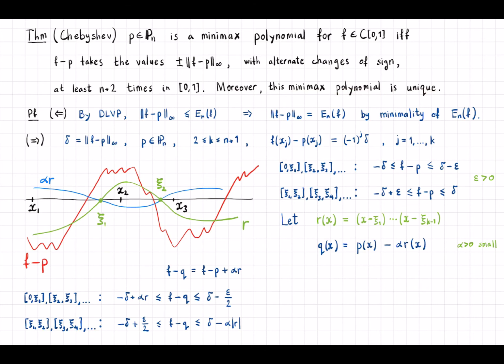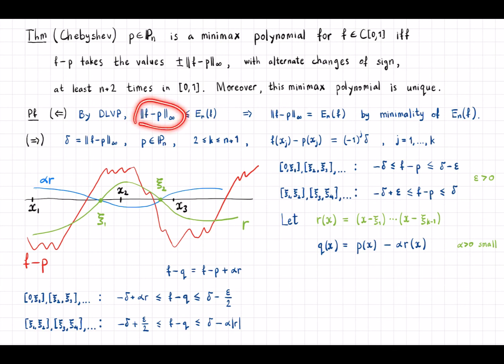First, let's prove the 'if' direction. We have f minus p taking those extreme values n plus two times, so we can apply De La Vallée-Poussin's theorem. By the theorem, the error of the minimax polynomial must be not smaller than those values — each e_j equals this norm — and since we're talking about the best approximation polynomial you can't have a strictly smaller error. So they must be equal, meaning p actually realizes the best possible error and is a minimax polynomial.